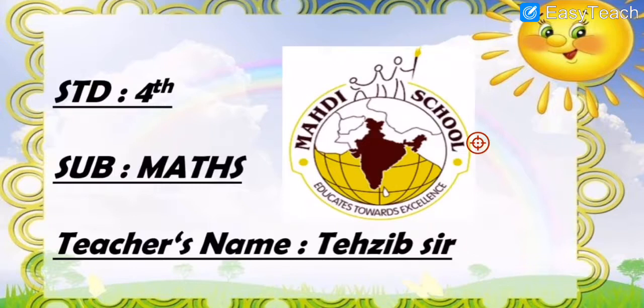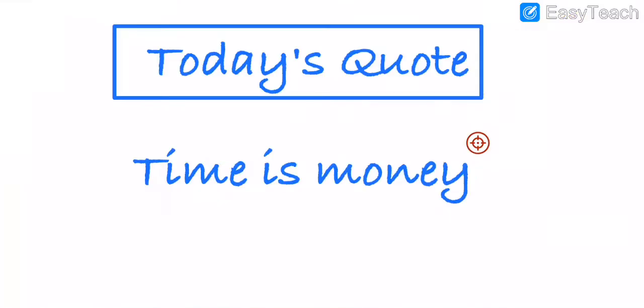So let's check today's code. What is today's code? Today's code is: Time is money. Okay, it's about time, and this is our chapter name. Time is very important for us. Time is money. So now we will move on further with our concept.